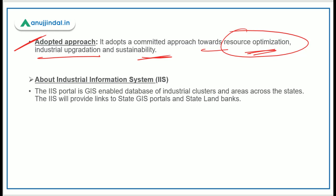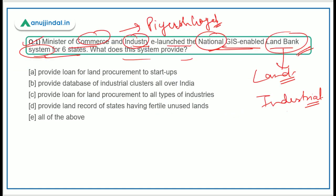The IIS portal is a GIS-enabled database of industrial clusters and areas across the states. It will provide links to state GIS portals and state land banks. This question is important for phase one exams. You should remember two things: the ministry that launched it and its basic aim, which is to provide a database of industrial clusters all over India.